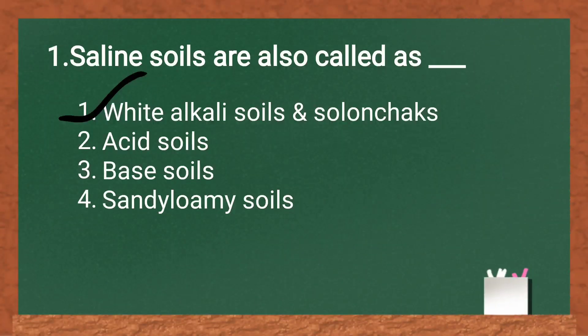Saline soils are also called as white alkali soils, solanchucks, acid soils, base soils, and sandy loamy soils. The answer is white alkali soils. Saline soils are nothing but salt accumulated in the soils, where sodium content is taken into the soil. So white alkali soils and solanchucks are the key terms.